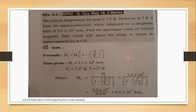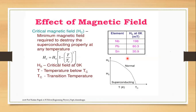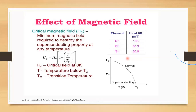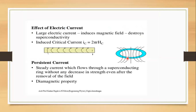These types of questions related to critical temperature or critical magnetic field are calculated using this formula. Next is the effect of the magnetic field, and the factors which affect superconductivity. The first factor is the effect of magnetic field, and the next is the effect of electric current. A large electric current induces a magnetic field and thereby destroys the superconductivity.